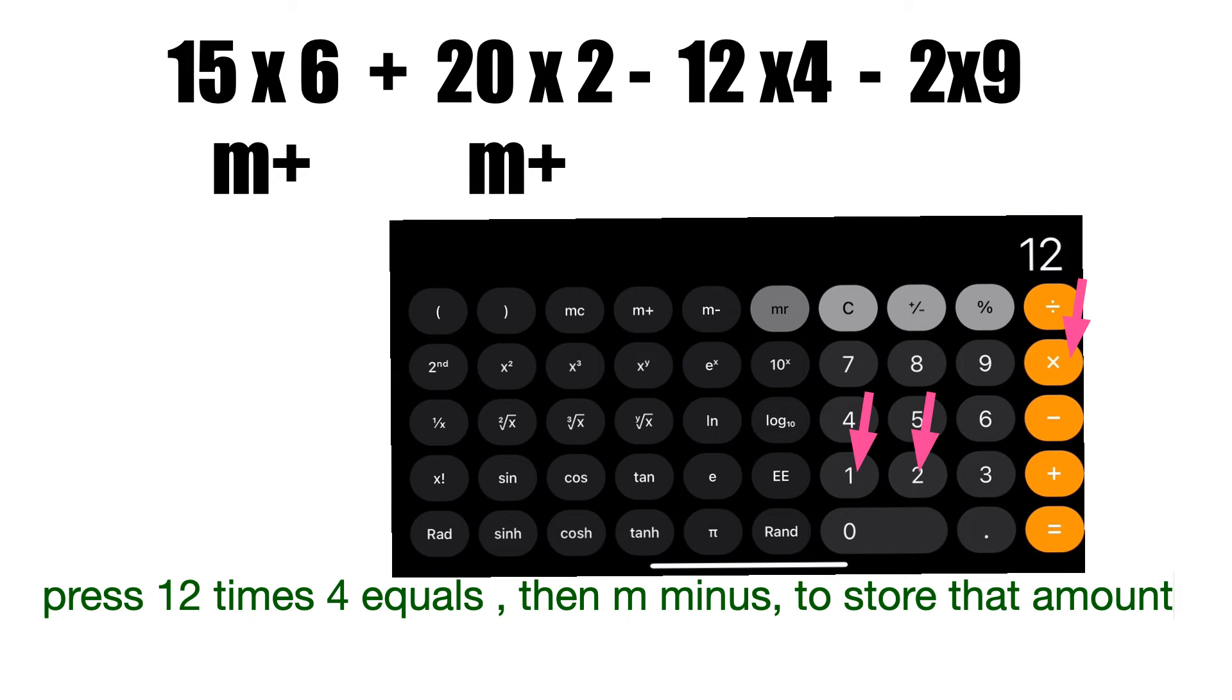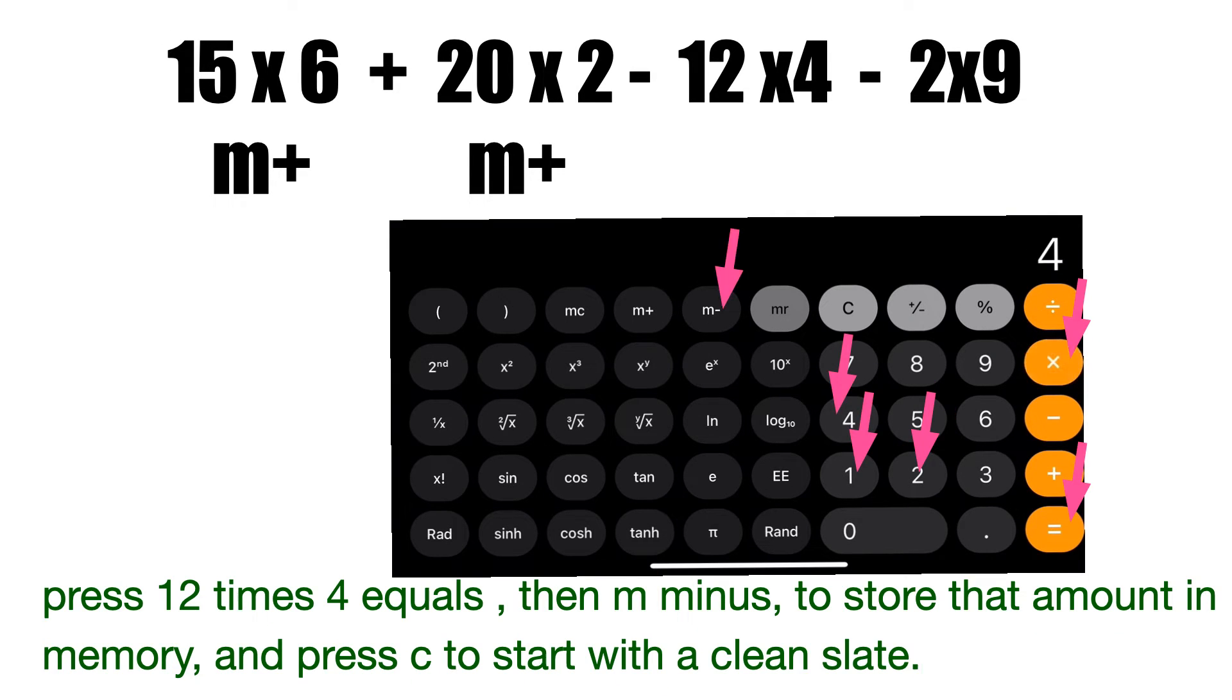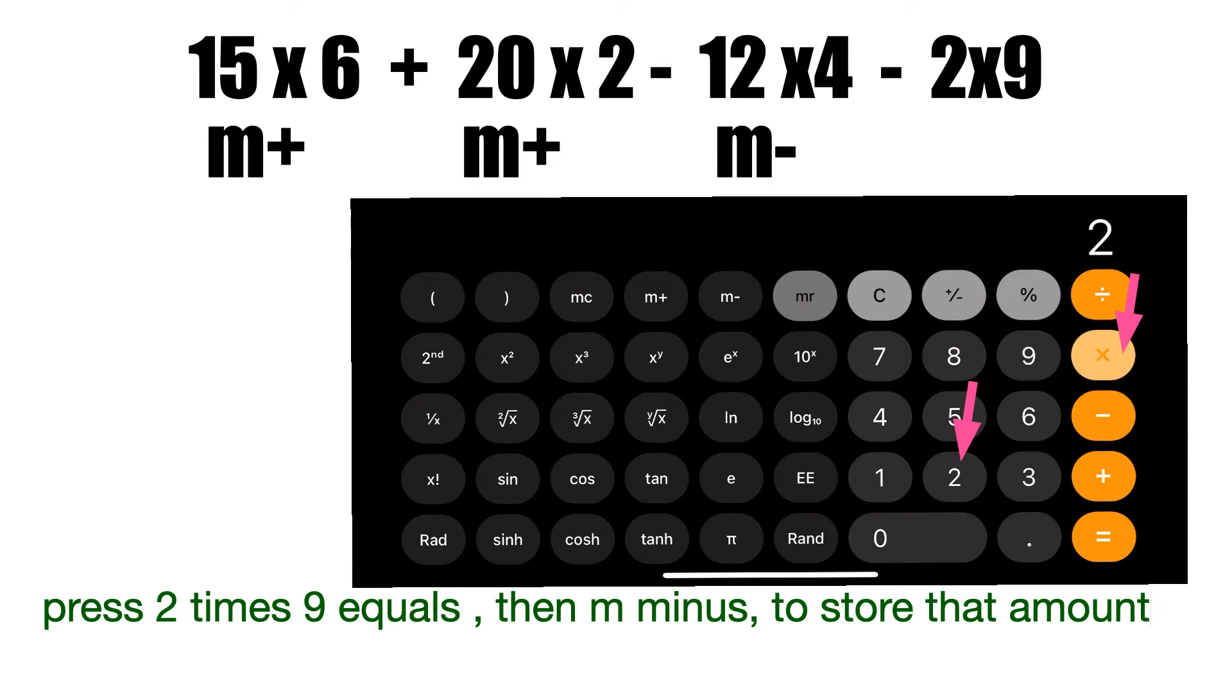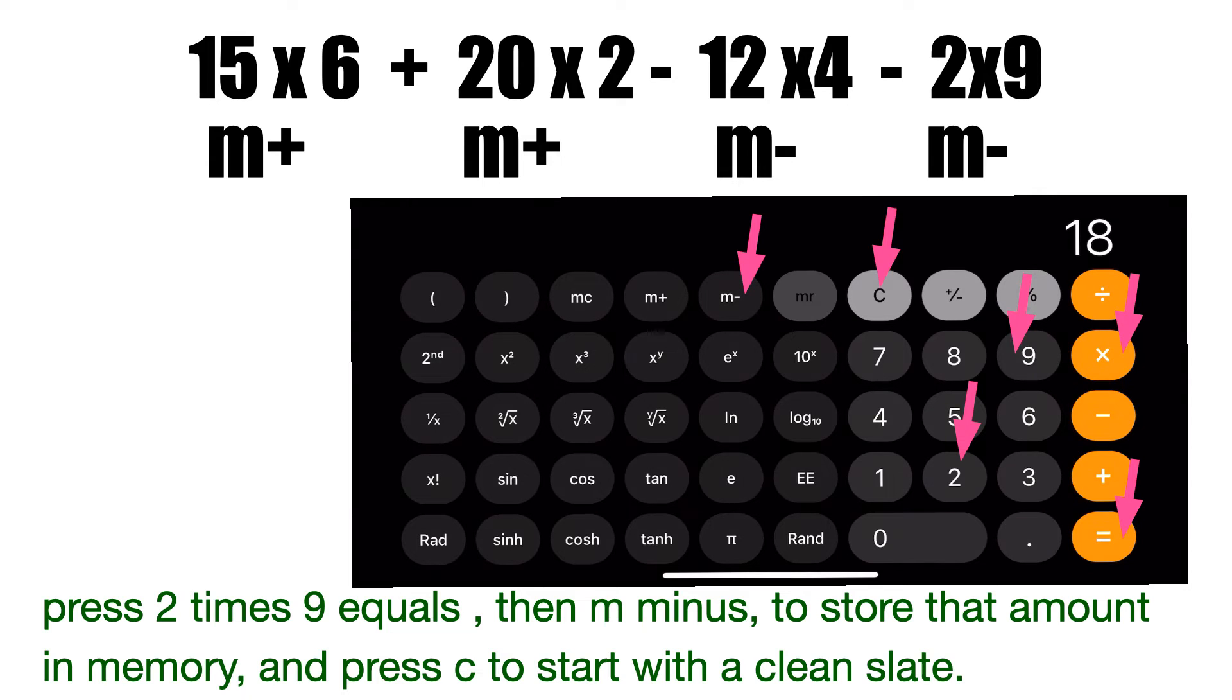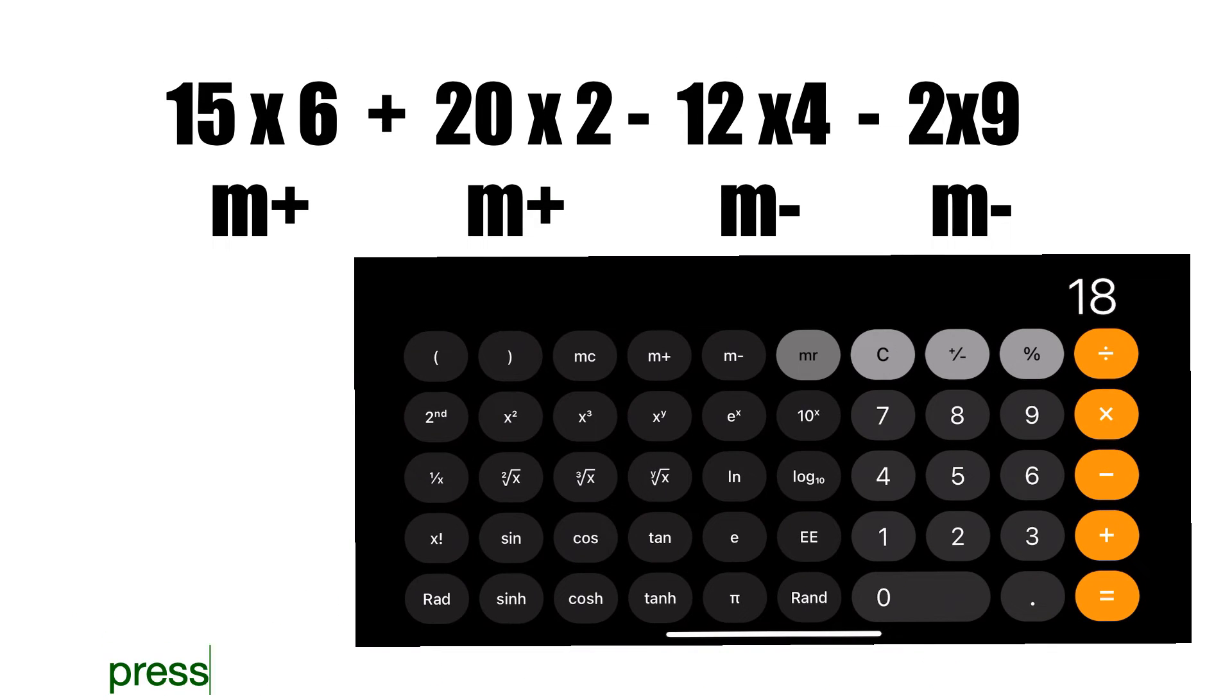Press 2 times 9, equals, then M minus to store that amount in memory, and press C to start with a clean slate. Press MR to recall the memory. The answer is 64.